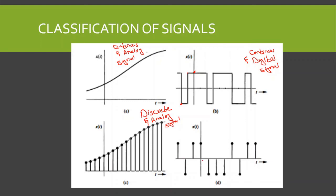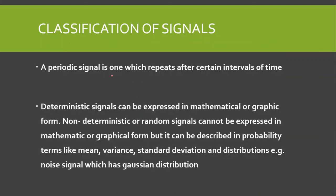For signal D, the time is discrete — not continuous like A and B — so this is again a discrete time signal. Looking at the amplitude axis, we have only two values, a finite number of amplitude values. Therefore, signal D is a discrete and digital signal.